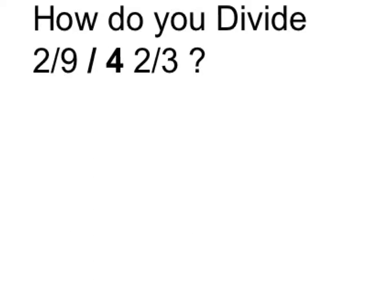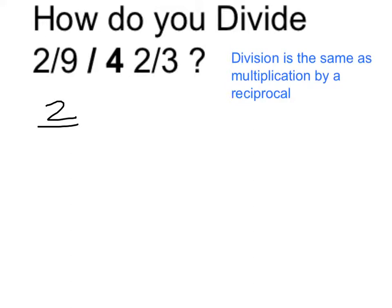Let's go ahead and apply the algorithm. So I want to rewrite my division as a multiplication by the reciprocal. So two-ninths divided by the reciprocal of four and two-thirds. Let me first convert this into an improper fraction. Four times three is twelve, plus two is fourteen. So that's going to be fourteen-thirds.